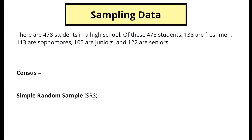Let's start by saying that we've got 478 students in a high school. Of these 478 students there are 138 freshmen, 113 sophomores, 105 juniors, and 122 seniors. We're going to be talking about a lot of different ways that we can pull information from these students.